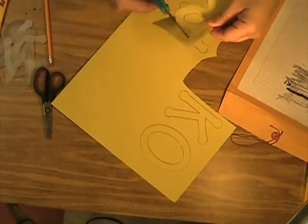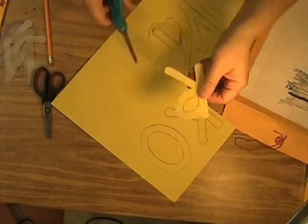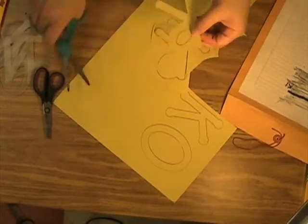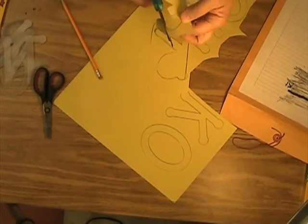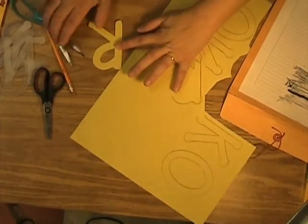Now for R's, A's, B's, anything like that that has a space in the middle, just cut a slit. Don't poke a hole. Just cut a slit and then you can cut out that middle part. You can cut a slit for this because we're going to be gluing these down anyway.